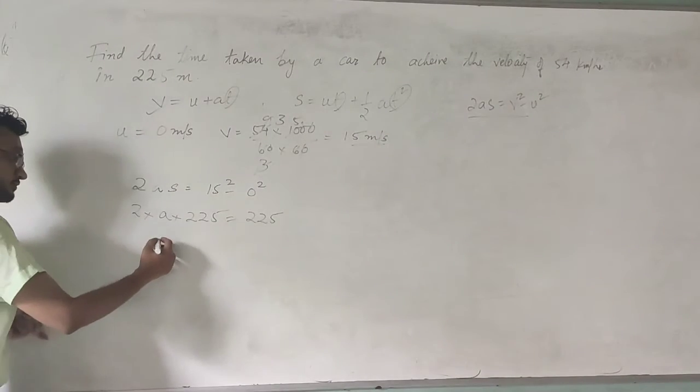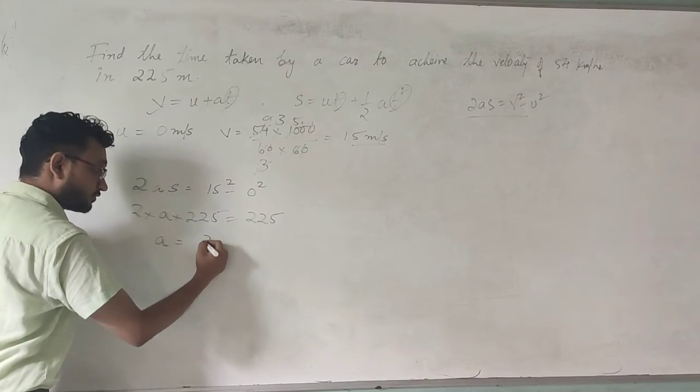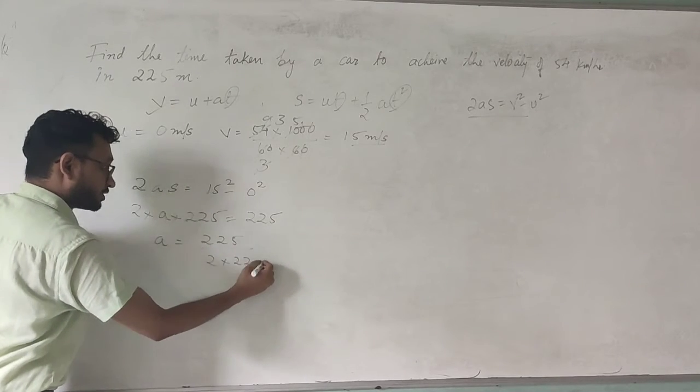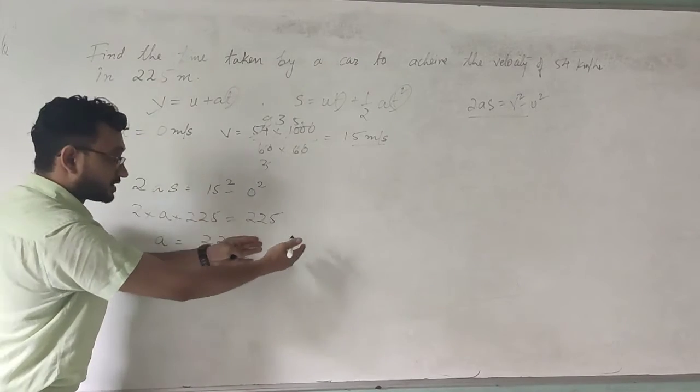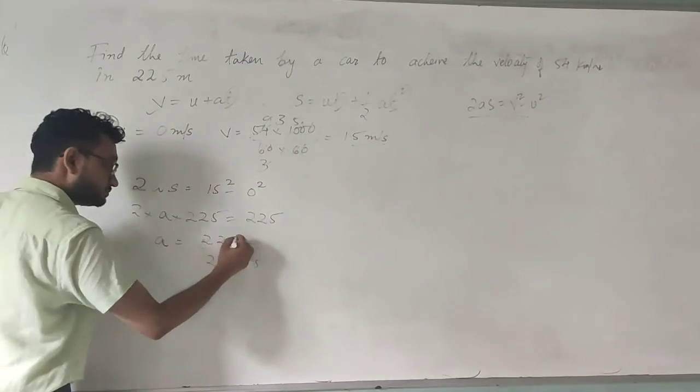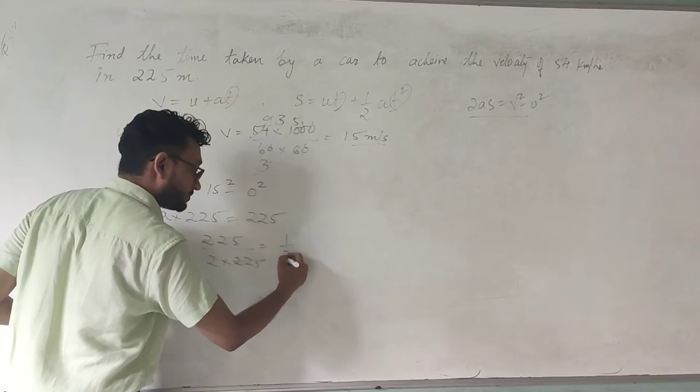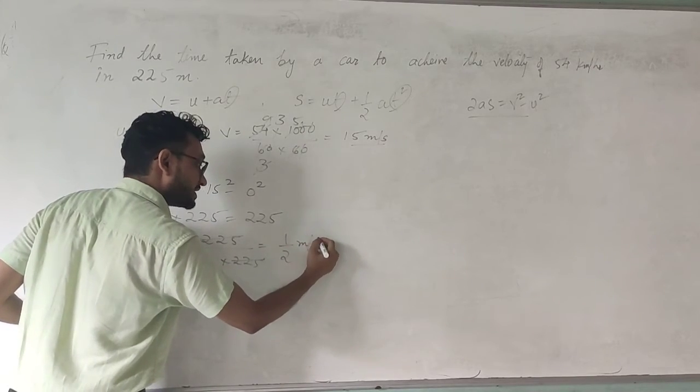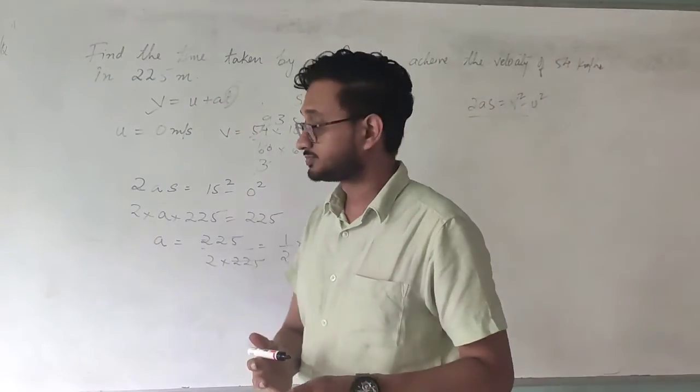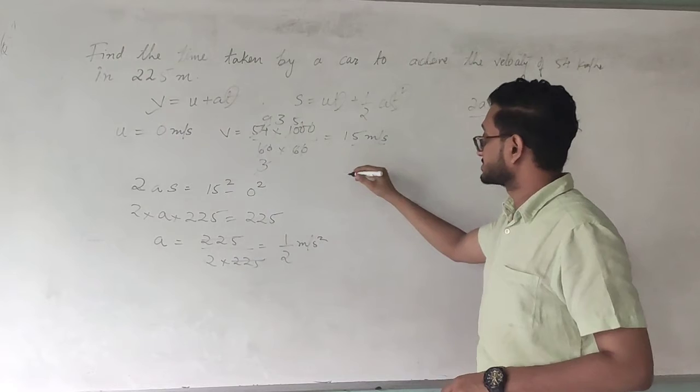So simple. To find the acceleration what you have to do is cross multiply the value. So what you get is a equals 225 upon 2 into 25. 225 and 225 cancel, what you get is 1 by 2. So you now have the acceleration.